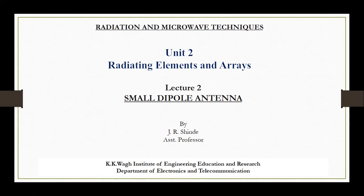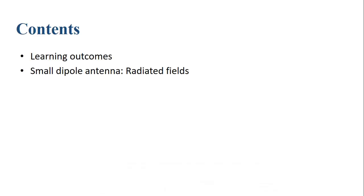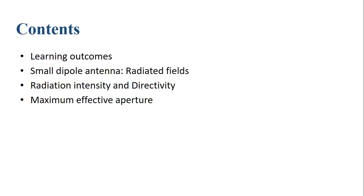Welcome to the video lectures on the course Radiation and Microwave Techniques. We are going through Unit 2, that is Radiating Elements and Arrays. From the previous lecture, we started Unit 2 with the analysis of dipole antennas, and the analysis of the infinitesimal dipole or Hertzian dipole antenna has been completed. Now we will move to the analysis of the small dipole antenna. The learning outcomes for today's lecture include: small dipole antenna parameters like radiated field, radiation intensity, directivity, maximum effective aperture, radiation resistance, and radiation pattern.